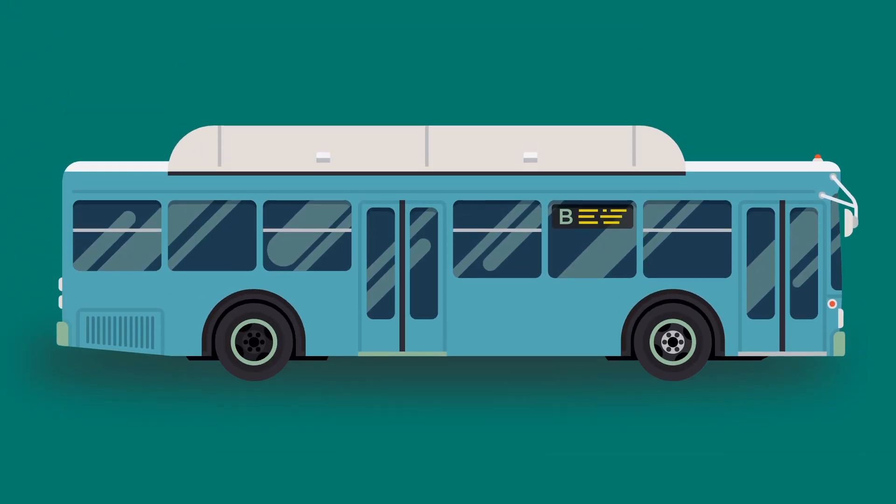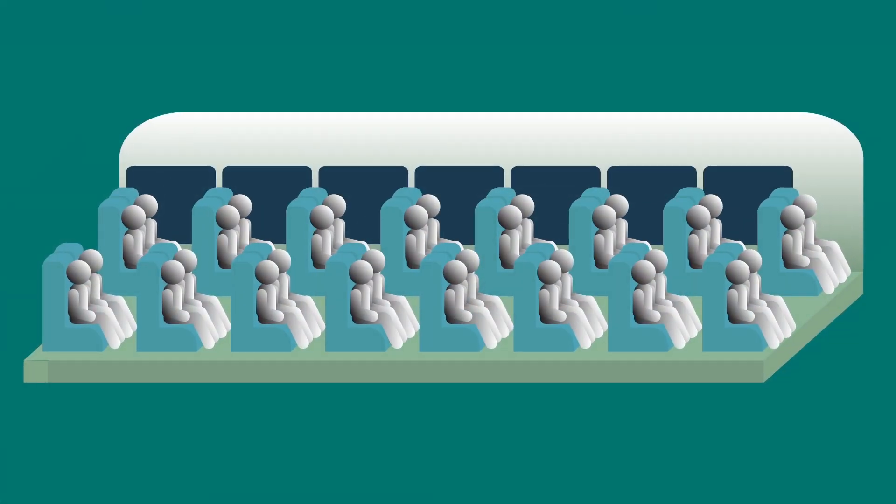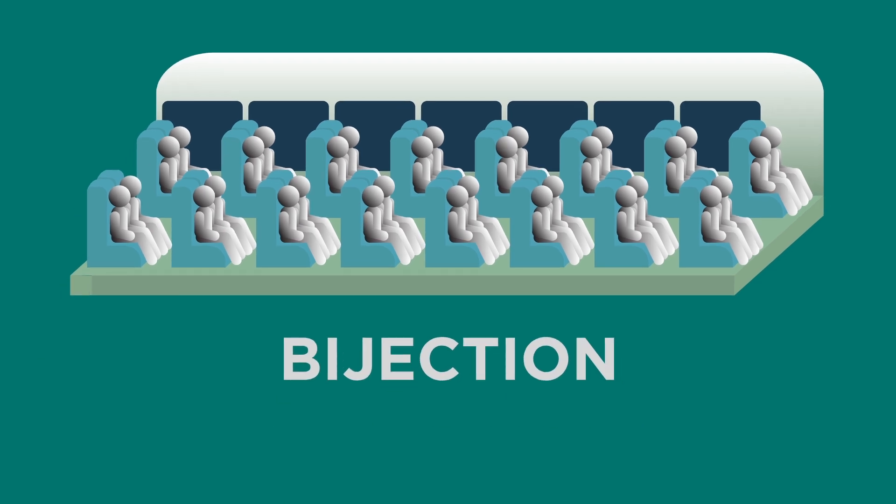We're going to have to use something called a bijection. What's that? Here's an example. Let's say you're sitting on a bus and notice that all the seats are taken, but no one's standing. Then you know that the number of people on the bus is equal to the number of seats on the bus. No counting needed. This is what mathematicians call a bijection. A bijection is a way of pairing elements from one set with elements from another set, and it proves that the two sets are the same size. There's a bijection or pairing between the seats and people. Each person is paired with the seat they're sitting in. It's also how I know I have the same number of fingers on both hands. I can pair them up. Got it?